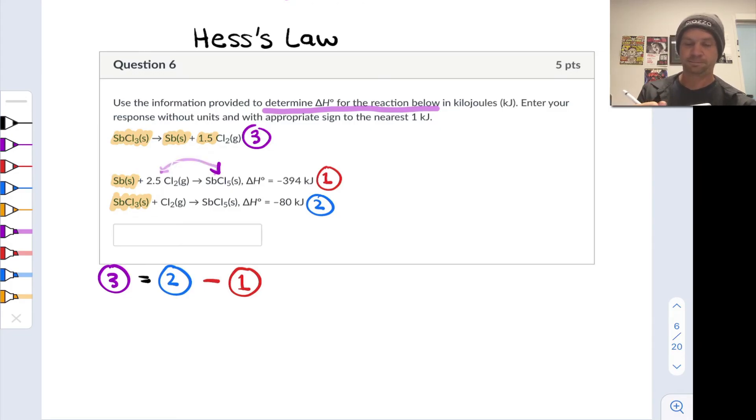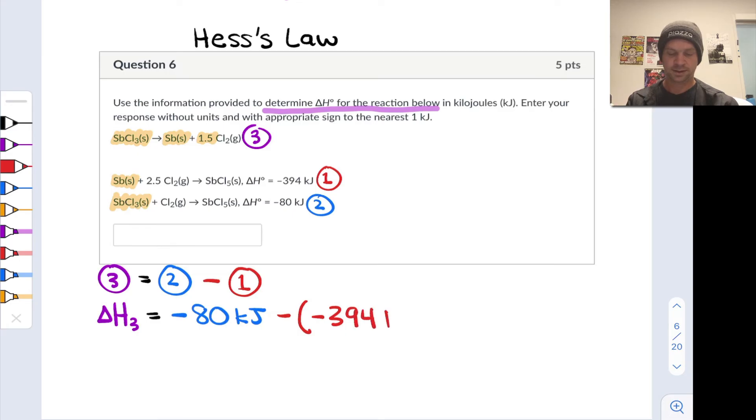We have successfully constructed reaction three from reactions one and two. At this point, to apply Hess's law, all we need to do is replace the reactions themselves with their corresponding enthalpy changes. Delta H3, which we don't know, is equal to delta H2 with the given sign, negative 80 kilojoules, minus the enthalpy change of reaction one, which is negative 394 kilojoules.